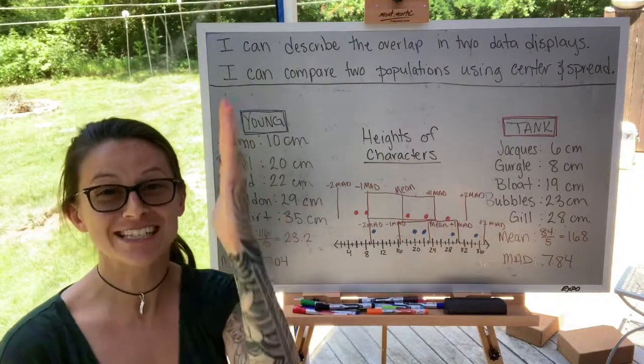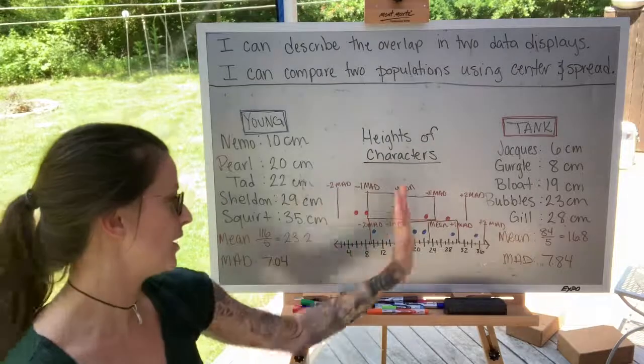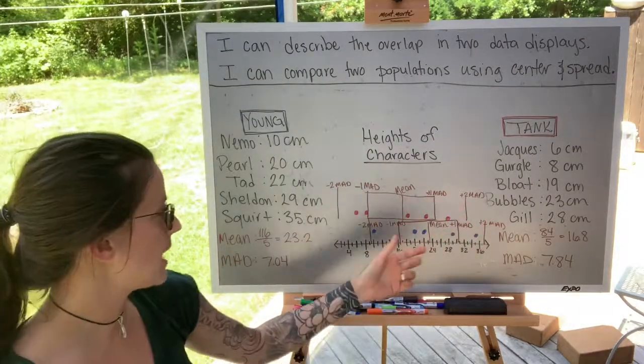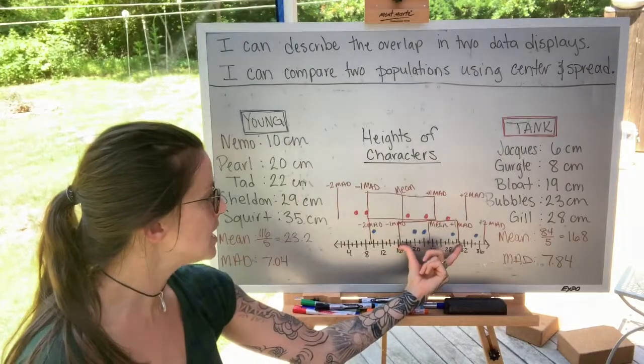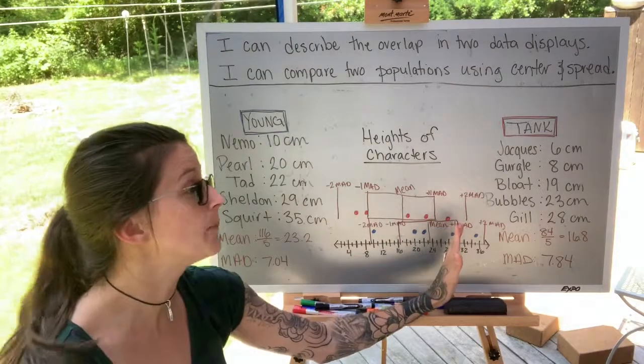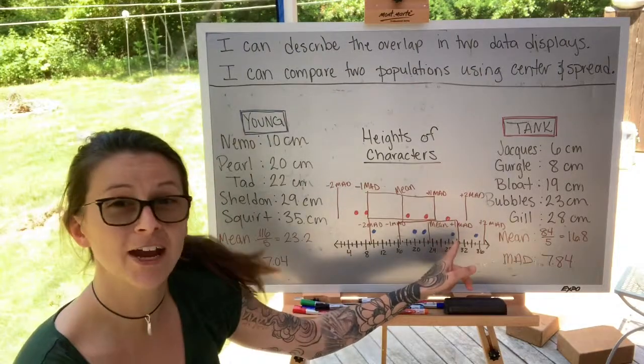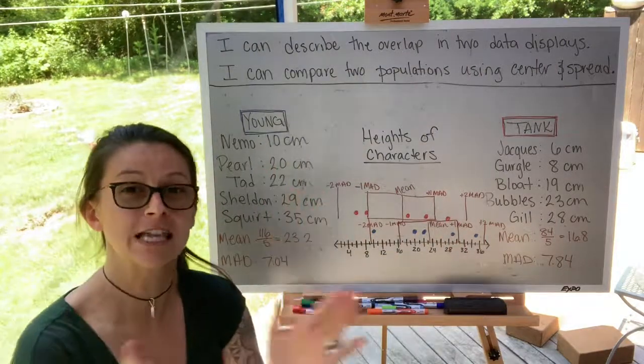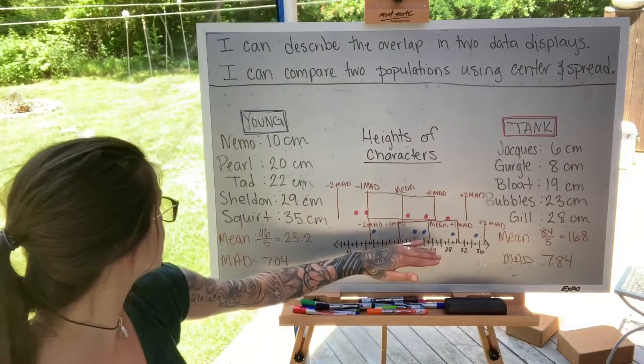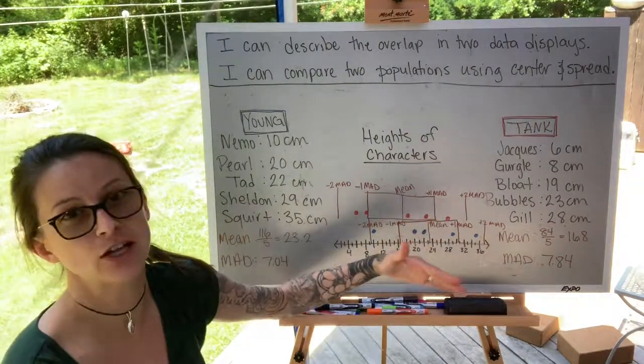So we use the center of the data as the starting point, and then we deviate from there, left and right, using one mean absolute deviation. So here you see, for the young characters, one mean absolute deviation below and above the mean. We have three characters that are typical because they fall within one mean absolute deviation of the mean, and those characters are Pearl, Tad, and Sheldon.